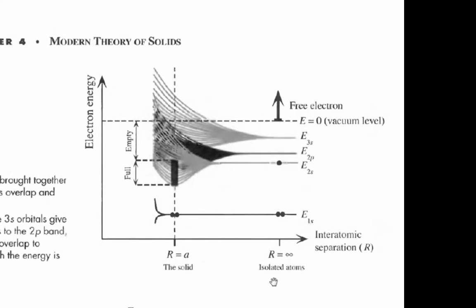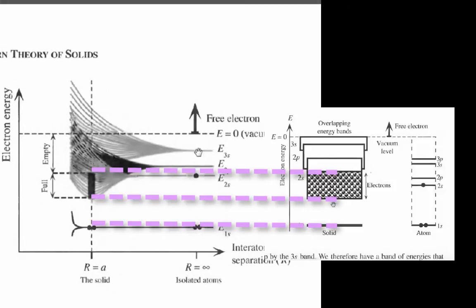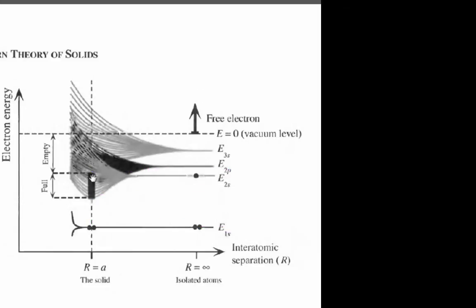Again, the lithium atoms are brought together. And these are the splitting bands, theoretically, what they would look like when they're separate atoms. You have discrete levels. When they come together, you have bands, a full band, now an empty band, valence band, and conduction band.